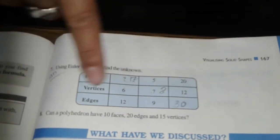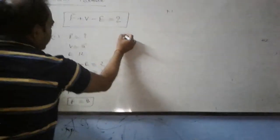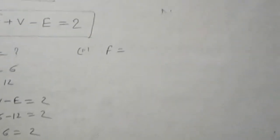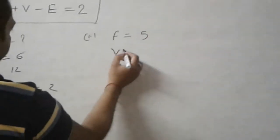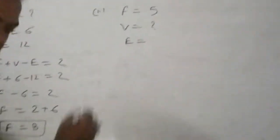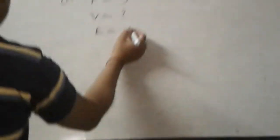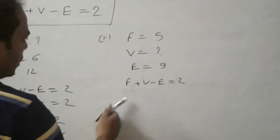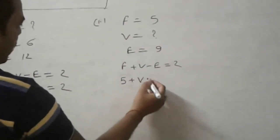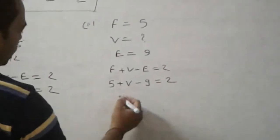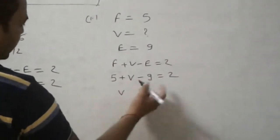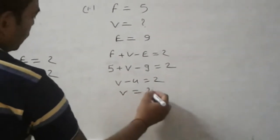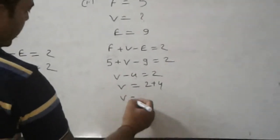In first part, faces will be 8. Now second part. In second part we will find vertices. Faces is given equal to 5, vertex we will find, and edges is given 9. Again apply F plus V minus E equals 2. Put the value of F, it is 5, V we will find, edges is 9 equals 2. 5 plus V minus 9, so V minus 4 equals 2, V equals 2 plus 4. In this part, number of vertices will be 6.